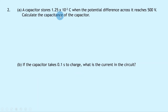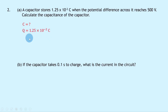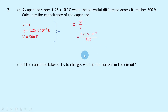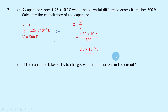Question 2a says that a capacitor stores 1.25 times 10 to the minus 2 coulombs when the potential difference across it reaches 500 volts. Calculate the capacitance of the capacitor. Writing down what we know, we're trying to find the capacitance C. We know the charge Q is 1.25 times 10 to the minus 2 coulombs and the potential difference V is 500 volts. We don't need to rearrange the equation this time, just plug in the numbers to get 1.25 times 10 to the minus 2 over 500, giving a final answer of 2.5 times 10 to the minus 5 farads.